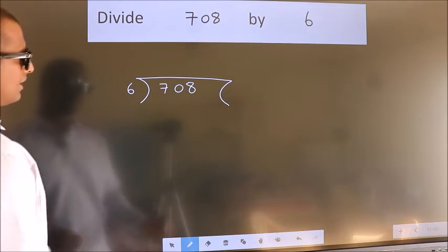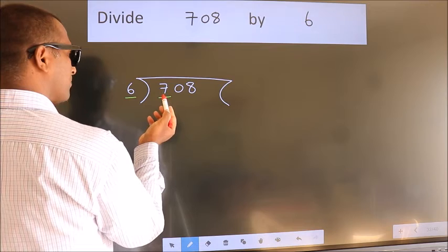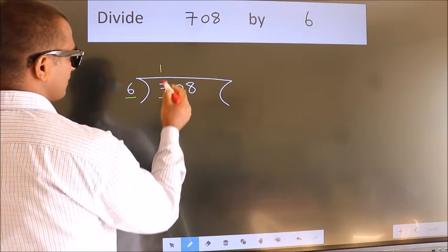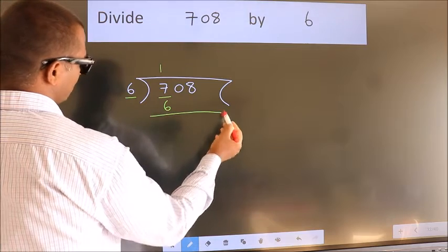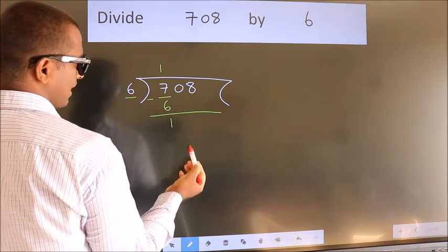Next. Here we have 7, here 6. A number close to 7 in 6 table is 6 once 6. Now we should subtract. We get 1.